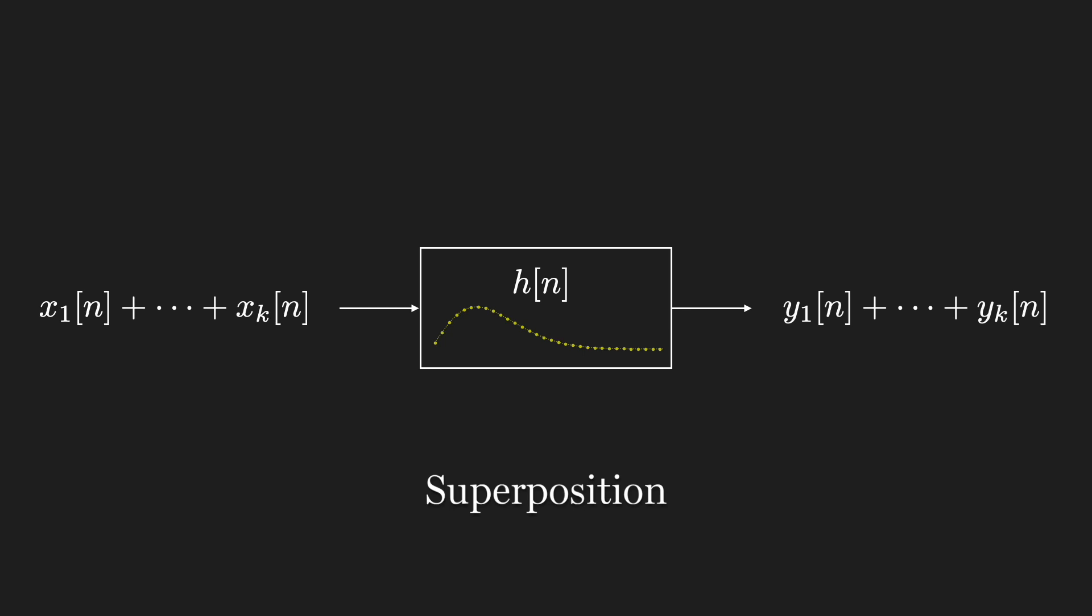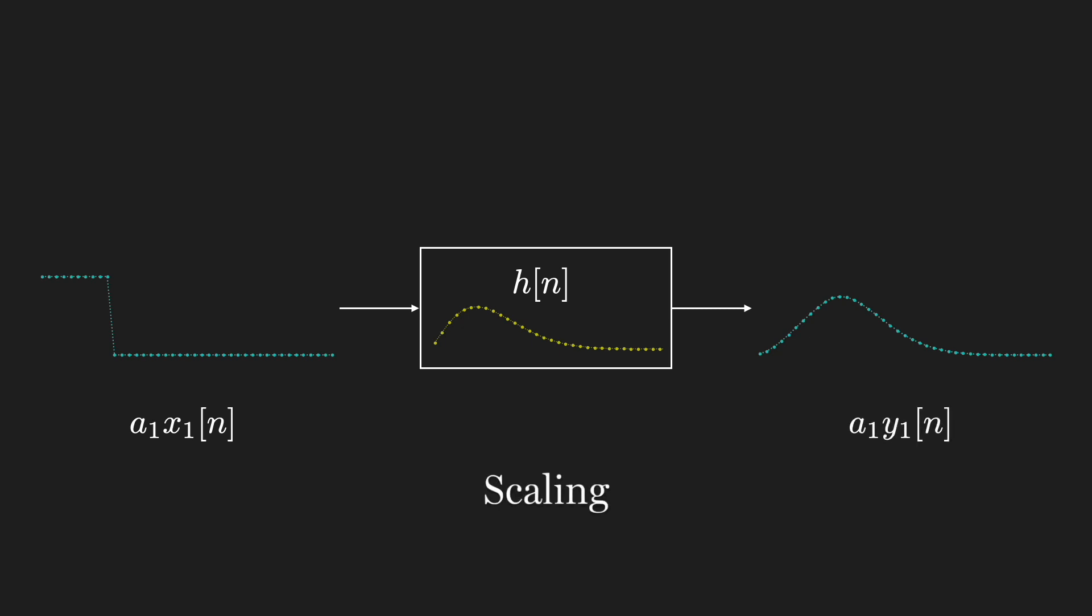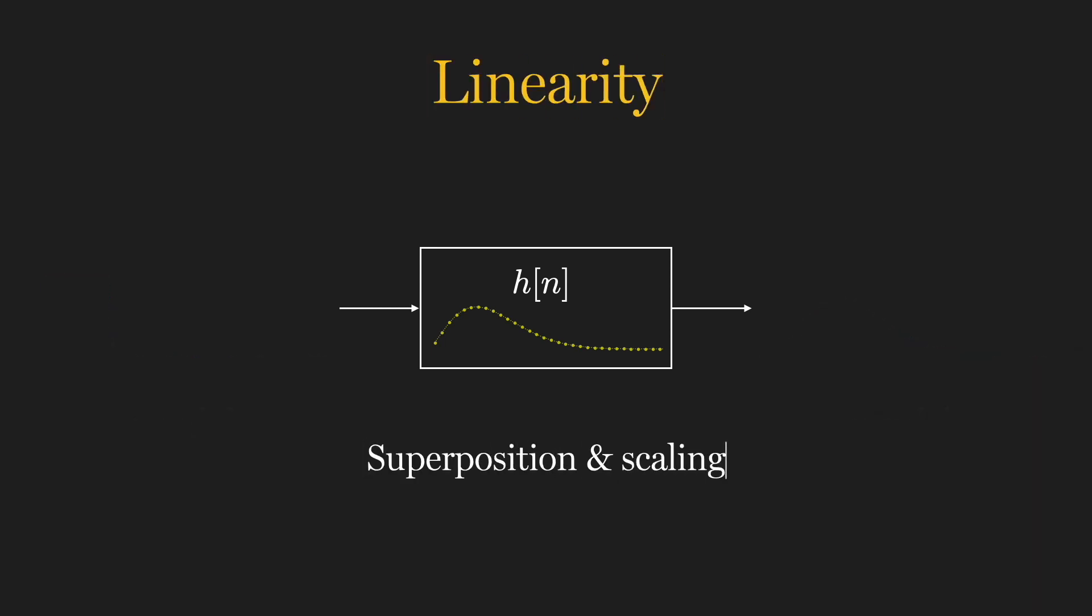Next, what if we scale an input to a linear system by a constant? If input x1 results in output y1, scaling the input by factor a1 will result in a corresponding scaling of the output by that same factor. So to be linear, a system's behavior must conform to both superposition and scaling, which we encapsulate with the following input-output relationship.